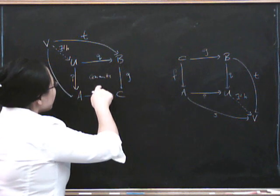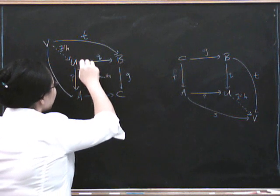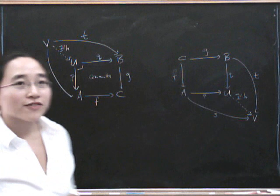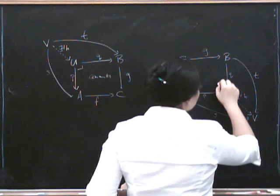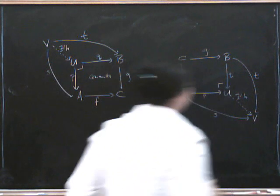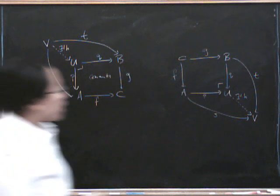Oh, by the way, if this is a pullback square, we quite often write a little thing like that in the top left-hand corner. And for a push-out, to indicate a push-out, we often write a little thing like that in the bottom right-hand corner.